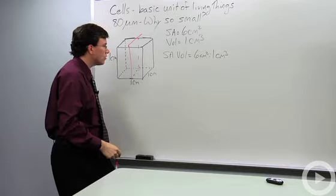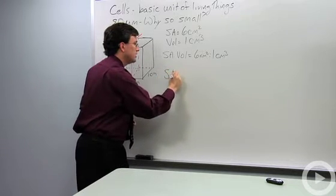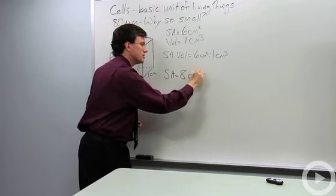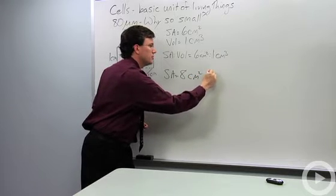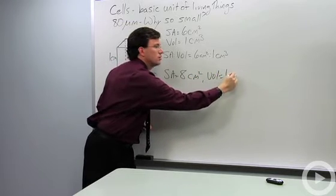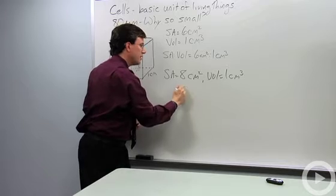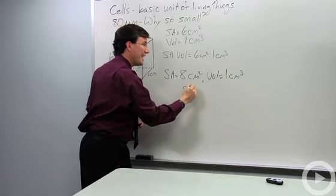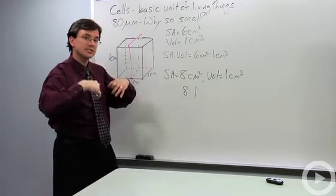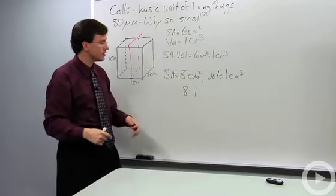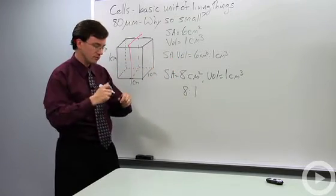So now the surface area equals eight square centimeters while the volume equals, still, a total of one cubic centimeter. That's a ratio of eight to one. Now it can suck in more materials per second because it's got more surface to do that sucking in through.